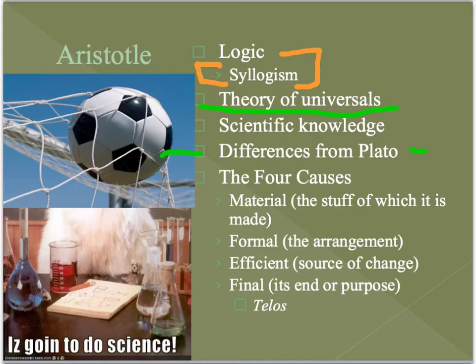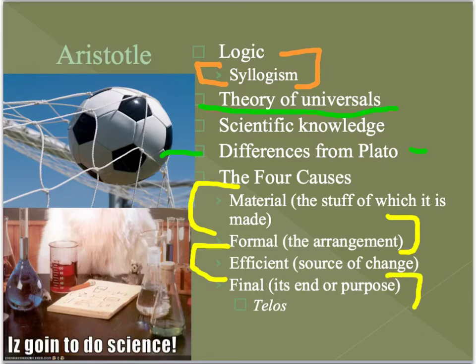He also talks about the four causes. The first is the material cause — everything is made up of something, what the actual material is. Then the formal cause — the way it's arranged. Then the efficient cause — the source of change. And finally the telos, meaning goal or purpose. The purpose of humans is to flourish and thrive.